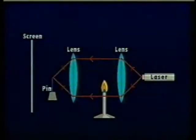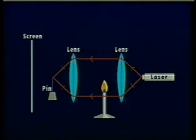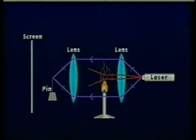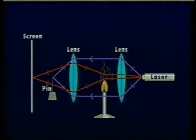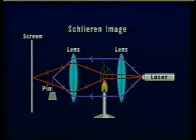The pin only blocks the rays which have converged at the focal point, which means that only those rays which entered the lens parallel to its axis have been blocked. Rays of light which have been refracted by the change in air temperature enter the lens on a path which is not parallel to the lens axis and thereby do not converge at the focal point. These rays are not blocked by the pin and are able to continue on and form an image on the screen. The only laser light therefore capable of getting through to the screen is light which is refracted by the change in air temperature and air density.